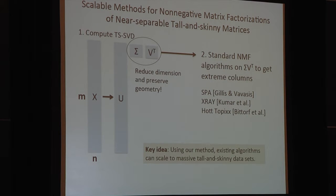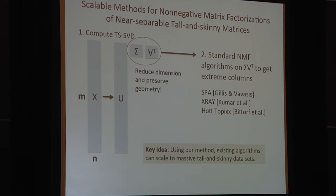The key tool we use is singular value decomposition. In particular, we show that we really only need the singular values and the right singular vectors in order to do these factorizations. What's interesting is that V-transpose is not necessarily non-negative — in fact it has negative entries — but the key insight is that the underlying orthogonal transformation preserves the convex geometry that many existing algorithms use. Some of those algorithms have been proposed here at NIPS recently. The overall algorithm is to take sigma and V-transpose and then use standard NMF algorithms, allowing us to scale up to some of the largest NMF computations to date.